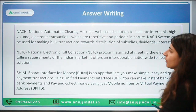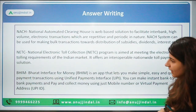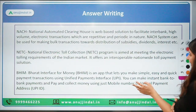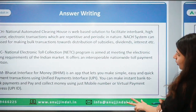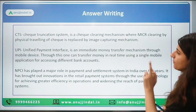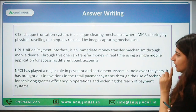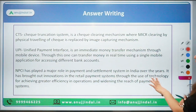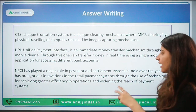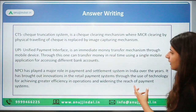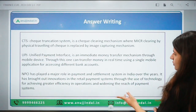The products to cover in the body: NACH — National Automated Clearing House — National Electronic Toll Collection, BHIM — Bharat Interface for Money — an app using which UPI payments can be made or money can be collected, CTS — Check Truncation System — UPI, and in the conclusion, write about how NPCI has used technology for achieving greater efficiency in operations and the future potential of digital payments.